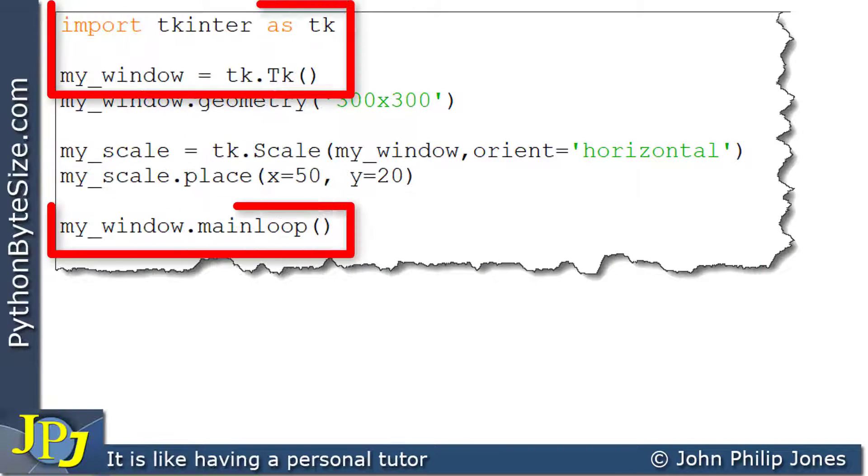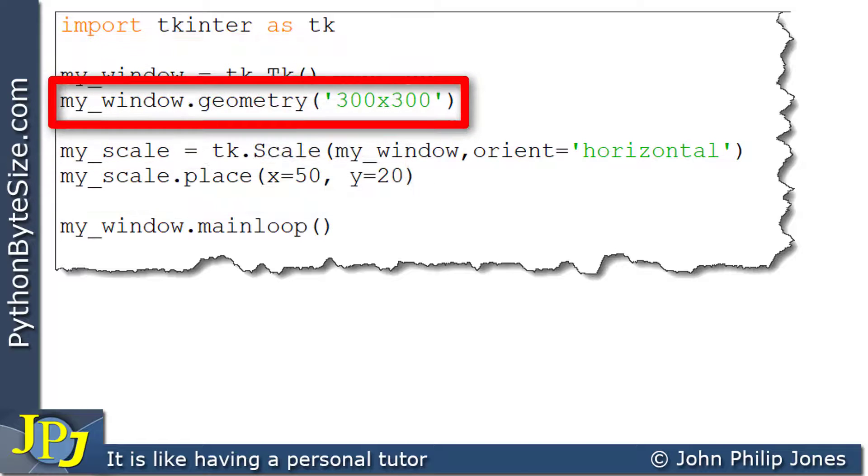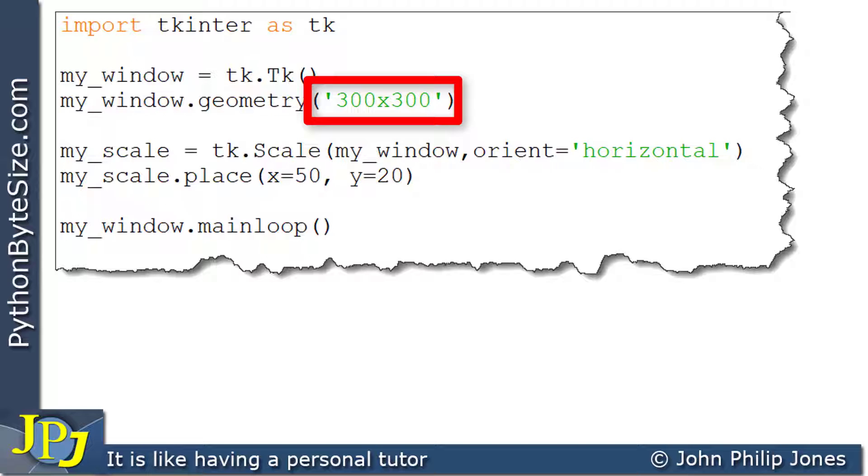We've seen these three program statements before, but we haven't seen this one for a while. What this will do is set the size of the window created to 300 by 300 pixels.